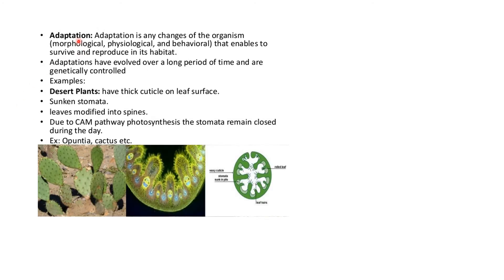Organisms also have the property of adaptation. Adaptation is any change — morphological, physiological or behavioral — that enables an organism to survive and reproduce in its habitat. Adaptations have evolved over a long period of time and are genetically controlled. Desert plants have thick cuticles on leaf surfaces to prevent water loss, shrunken stomata, and leaves modified into spikes. Due to the CAM pathway of photosynthesis, stomata remain closed during the day — examples include cactus and opuntia.